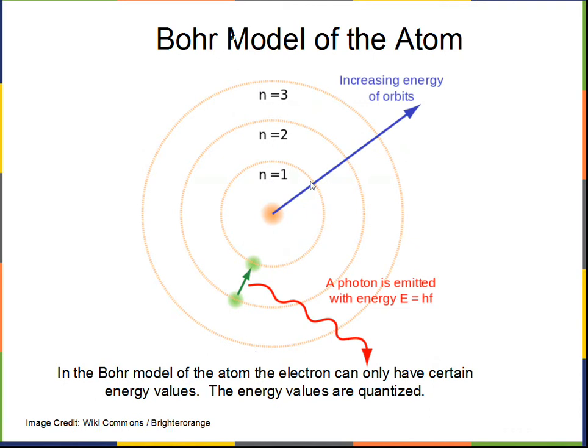Bohr made this model where the orbits have quantized energy levels. With quantized energy levels, not every energy is possible, but only definite energies. Then we get spectral lines. We don't get a blackbody spectrum because not all energies are possible. When we do these subtractions, there are only certain energies that are possible, and that only gives us certain colors of light from the atom.